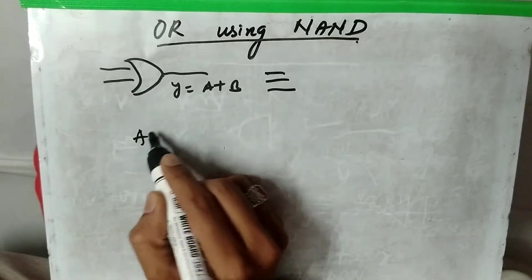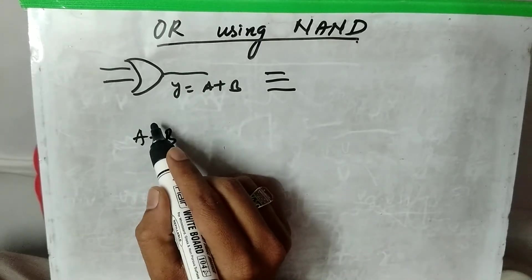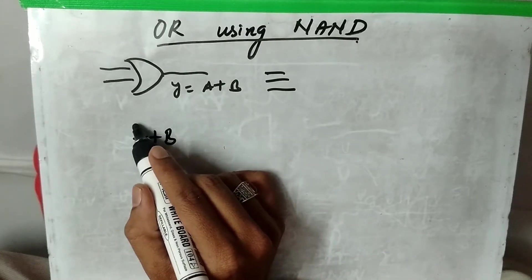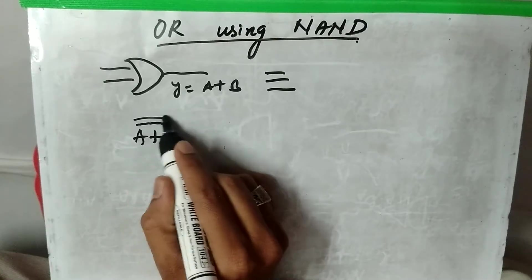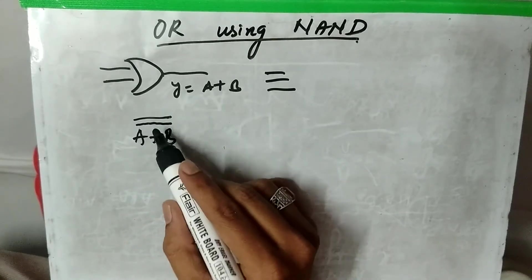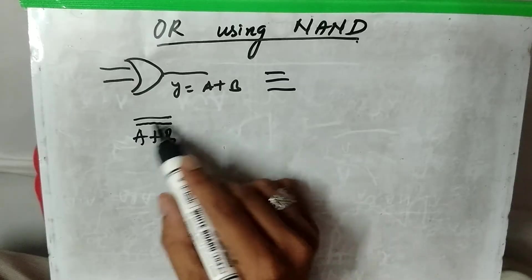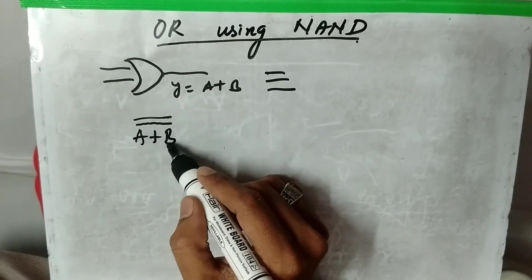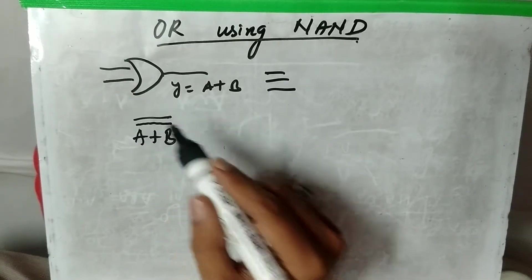Let us take this output A plus B, then take two bars, double inverting it. So it will be the same thing, A plus B double bar will cancel and we will get A plus B.